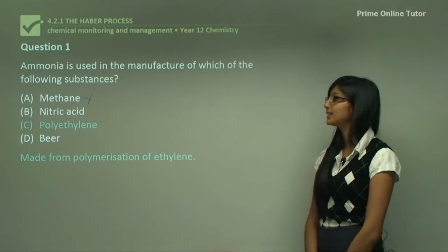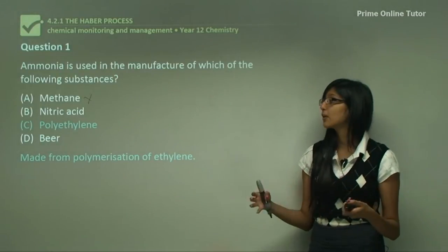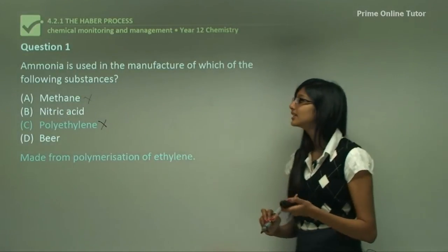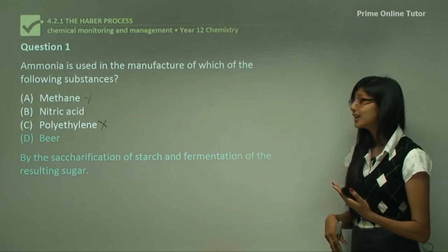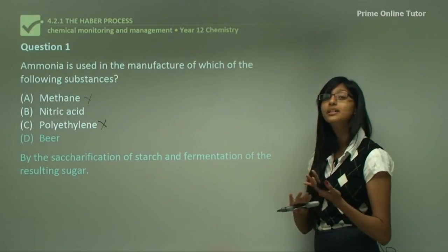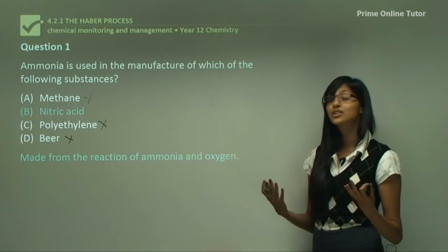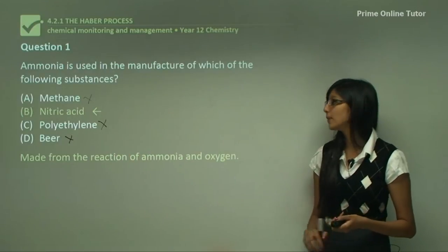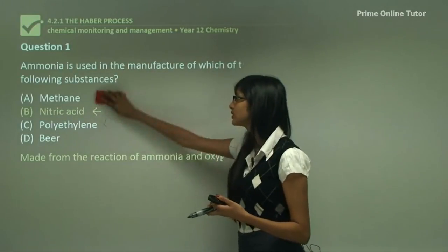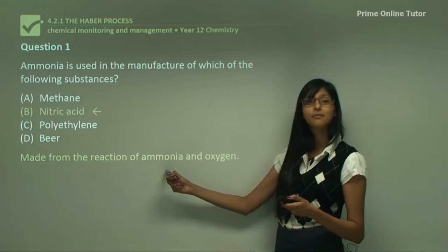Let's look at C — polyethylene. Polyethylene is actually produced by the polymerization of ethylene, where ethylene molecules join together to form polyethylene. Ammonia is not involved in this reaction, so C is not the answer. Now D — beer. Beer is manufactured by the saccharification of starch and fermentation of the resulting sugar; ammonia has nothing to do with the manufacture of beer, so D is not our answer. Hence our answer is B, nitric acid. Nitric acid is formed by the reaction of ammonia and oxygen, and we know the production of nitric acid is used to make explosives, which was a very important use of ammonia.